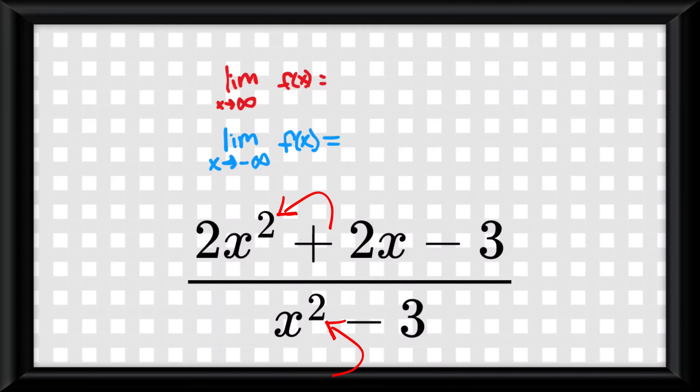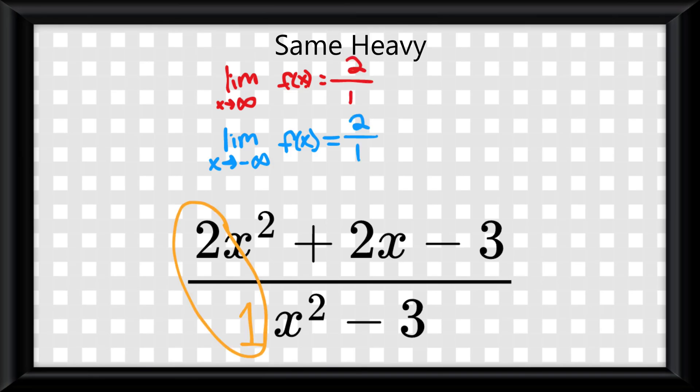If between the numerator and the denominator, they have the same degree, it is said to be same-heavy. The limit as x approaches positive or negative infinity of f of x will be the ratio of the leading coefficient over the leading coefficient. This will also be the horizontal asymptote of the graph.